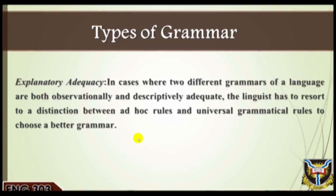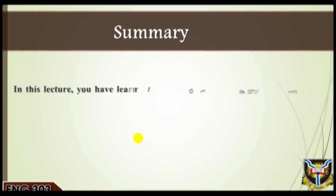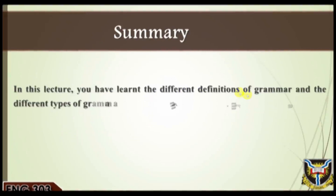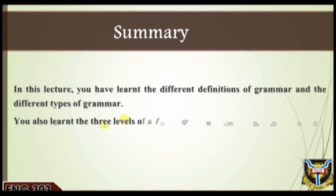If a language satisfies the foregoing levels of adequacy, its grammar is regarded as adequate. However, no language has yet been reported to have reached this point of adequacy; hence each language is still being studied to achieve the three levels of adequacy. Summary: In this lecture you have learned the different definitions of grammar and the different types of grammar. You also learned the three levels of adequacy on which a grammar is tested. We have come to the end of session one. Thanks for listening.